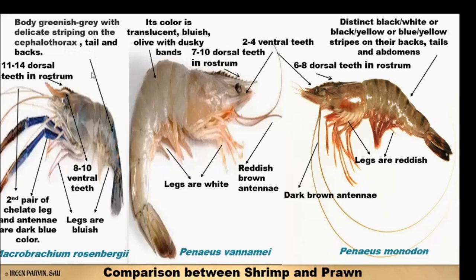In the case of Macrobrachium rosenbergii, the body is greenish-gray with delicate striping on the cephalothorax, tail, and legs. Eleven to fourteen dorsal teeth are present in the rostrum. The second pair of chelate legs and antennae are dark blue in color. Legs are bluish. In the case of both shrimp species, two to four ventral teeth are present, while in the case of Macrobrachium rosenbergii, eight to ten ventral teeth are present.